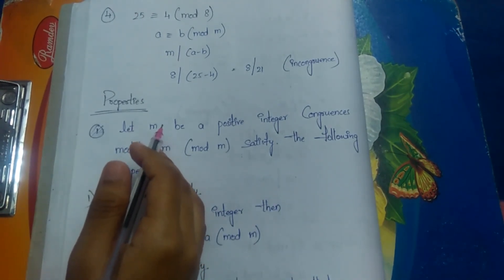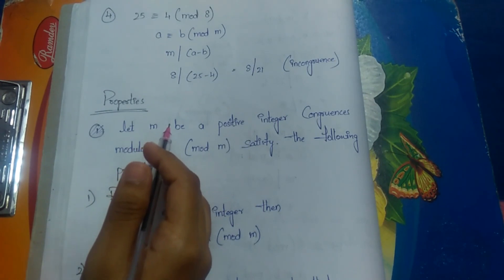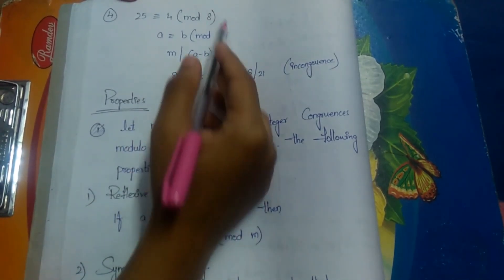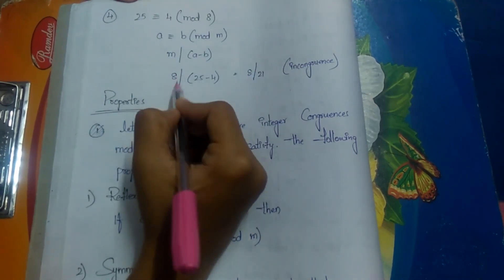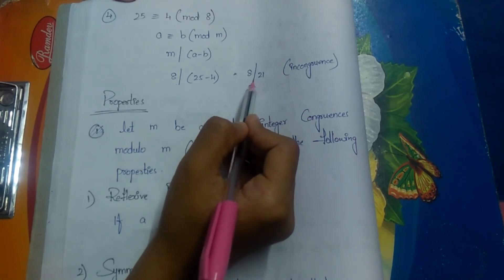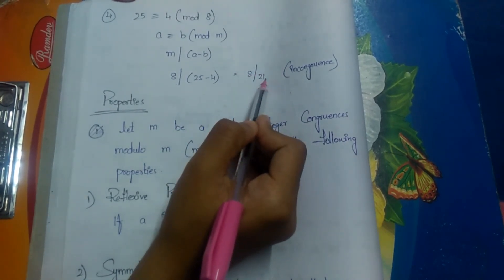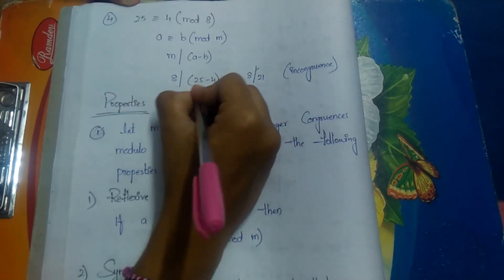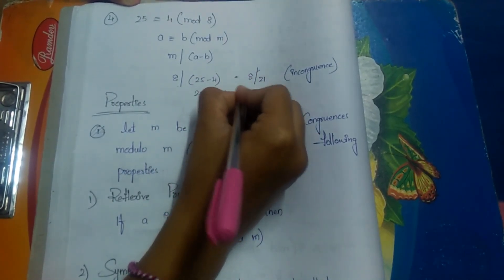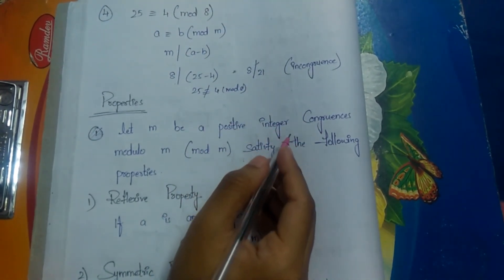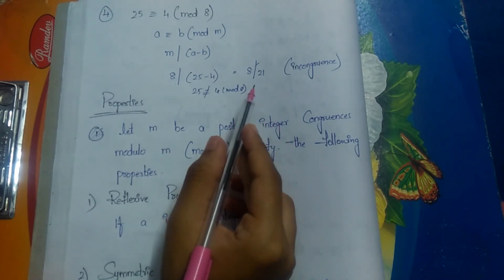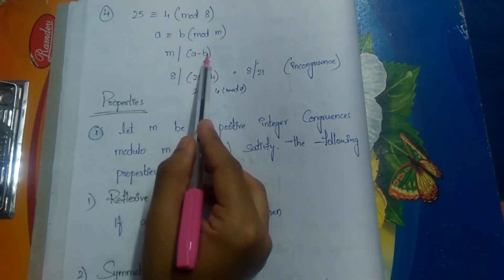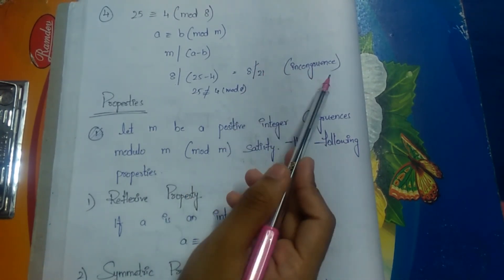Fourth example: is 25 congruent to 4 modulo 8? Using m divides a minus b: m = 8, a = 25, b = 4. So 8 divides 25 minus 4, which is 8 divides 21. Since 8 does not divide 21, this is incongruent. Therefore 25 is incongruent to 4 modulo 8. To summarize: if m divides a minus b it is congruent; if not, it is incongruent.